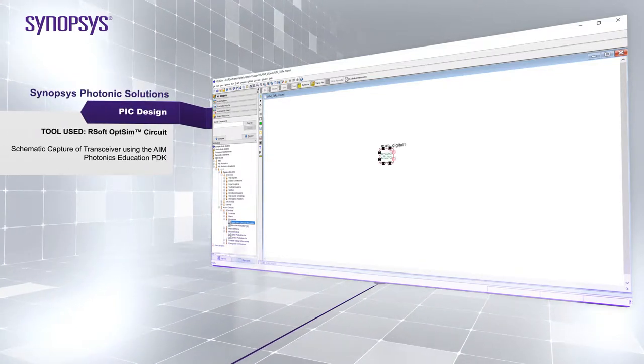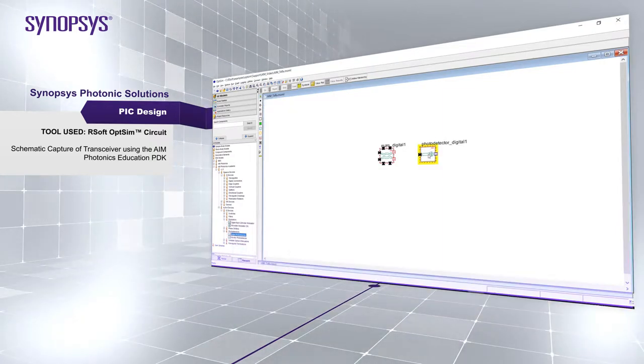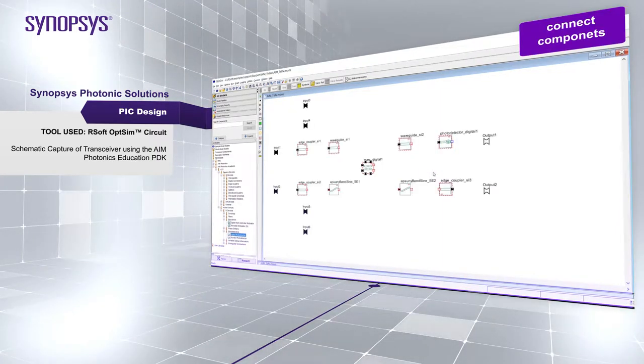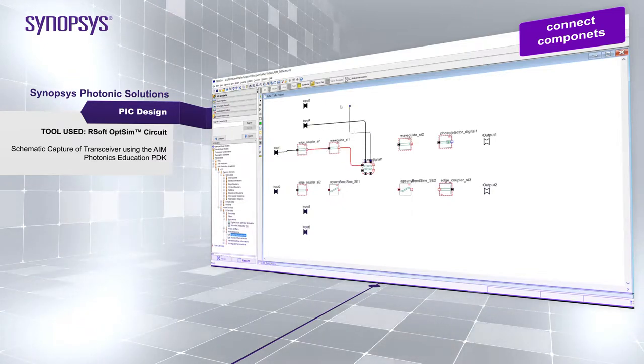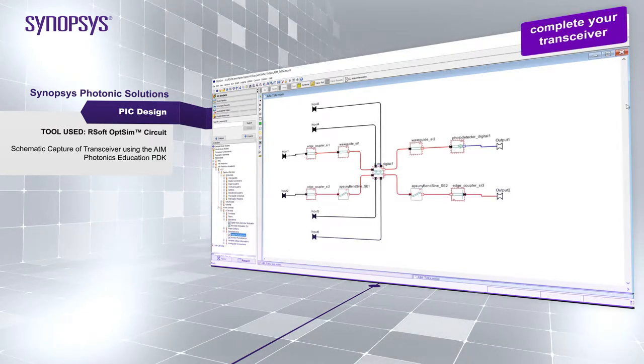Using OpSim Circuit's intuitive graphical user interface, drag and drop components from the AIM Education PDK to create your transceiver, adding elements such as the MZM and photo detector, as well as edge couplers and waveguide routing. Connect the components to produce a complete schematic for simulation.